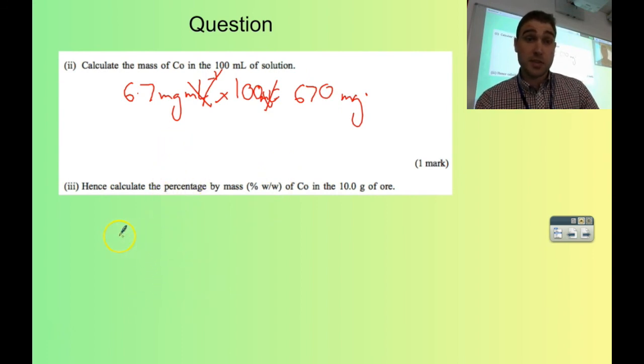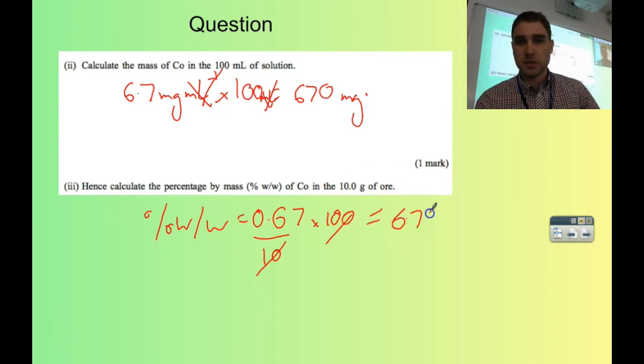The next part of the question says, calculate the percentage by mass of cobalt in the sample. We go percent weight for weight. We had 670 milligrams, which is 0.67 grams. How do I know that? There's 1000 milligrams in a gram. We've only got 670, so it's 0.67. That's out of a total of 10 grams. To find percentage, we times that by 100. 0.67 times 10, so that's 6.7%. We get 6.7% weight for weight cobalt in the 10 gram sample.